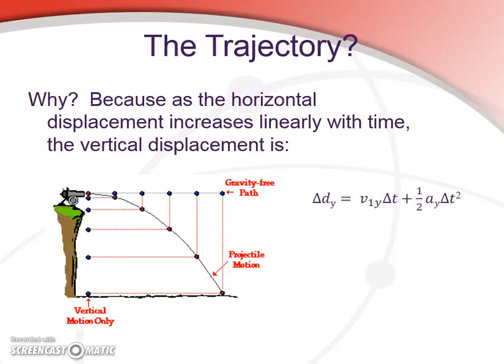If we want to consider the y component of the motion, essentially all of our uniform acceleration equations apply to that y case. One of the more useful cases is this one, where we have our displacement in the y direction, given by the initial y velocity times the duration of the experiment, plus one-half of the acceleration times duration squared. And, of course, the acceleration is negative g, or negative 9.8 meters per second squared.